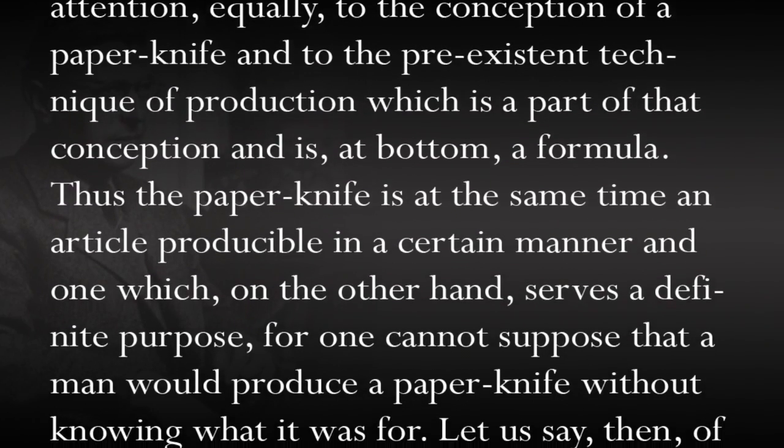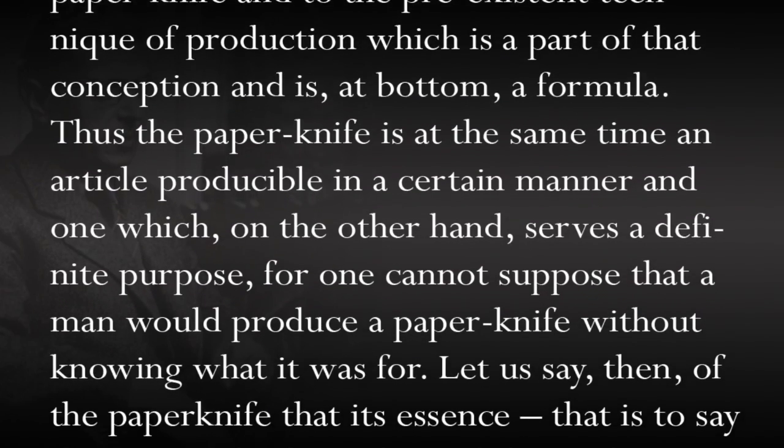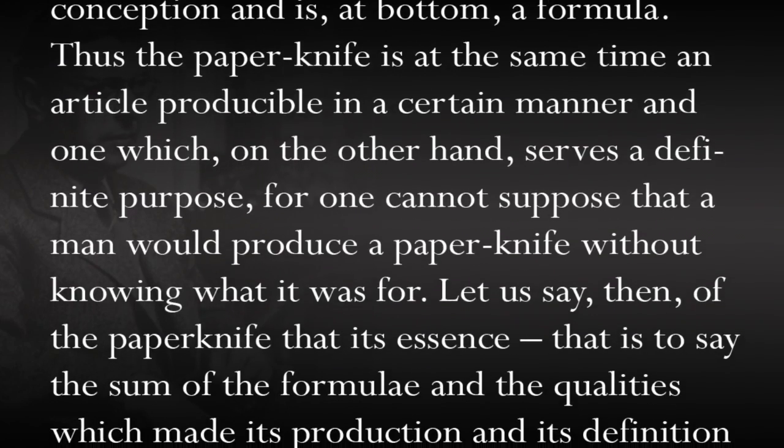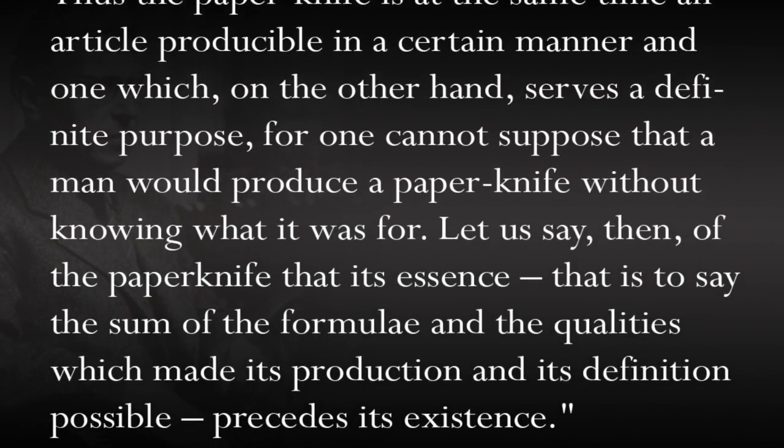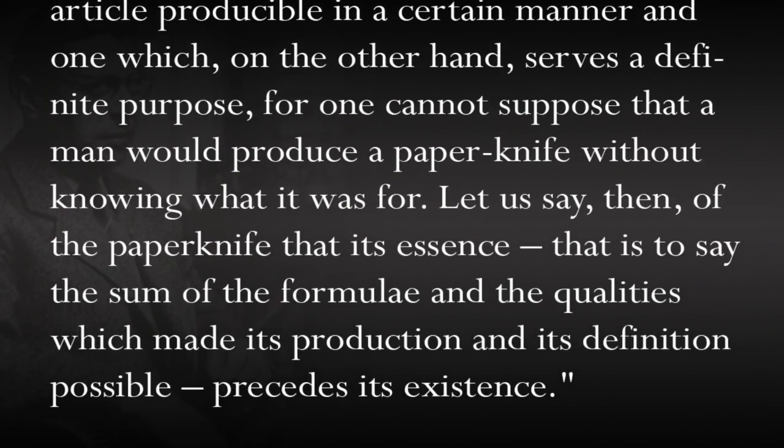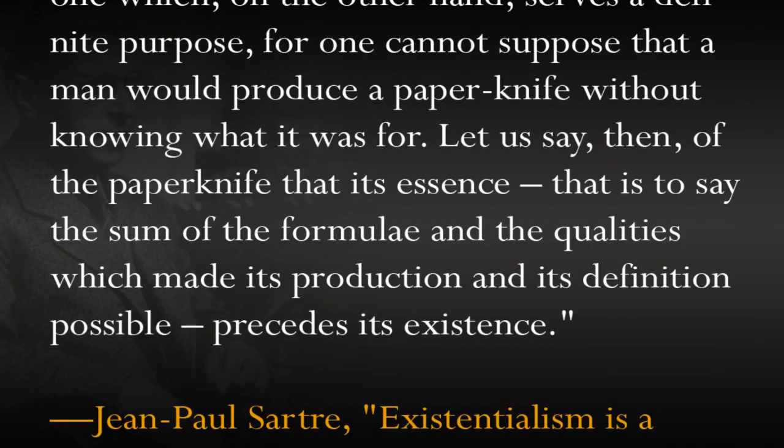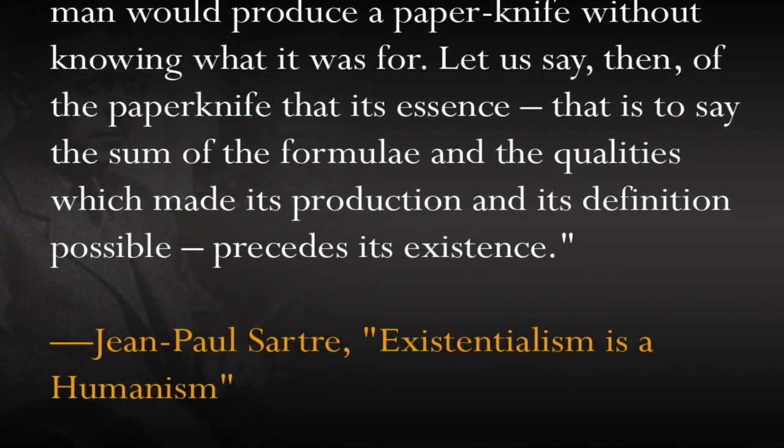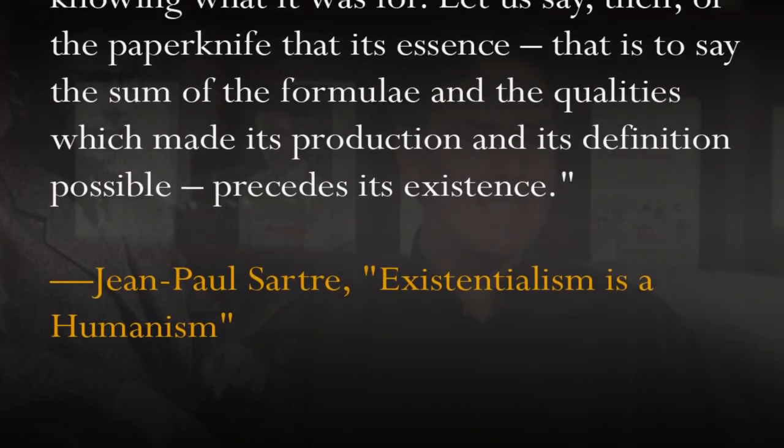Thus, the paper knife is at the same time an article producible in a certain manner and one which, on the other hand, serves a definite purpose. For one cannot suppose that a man would produce a paper knife without knowing what it was for. Let us say, then, of the paper knife that its essence, that is to say, the sum of the formulae and the qualities which made its production and its definition possible, precedes its existence.